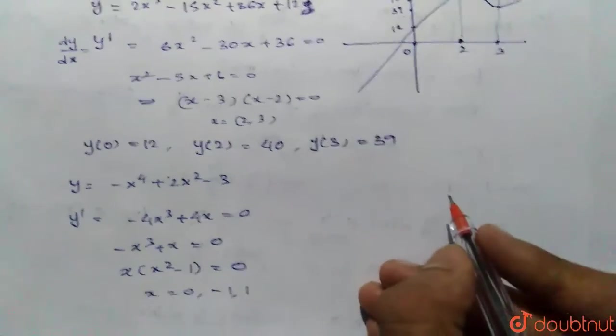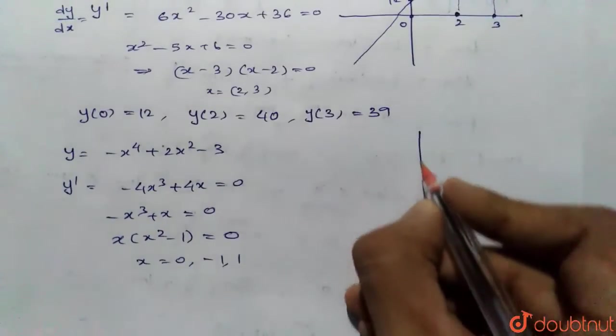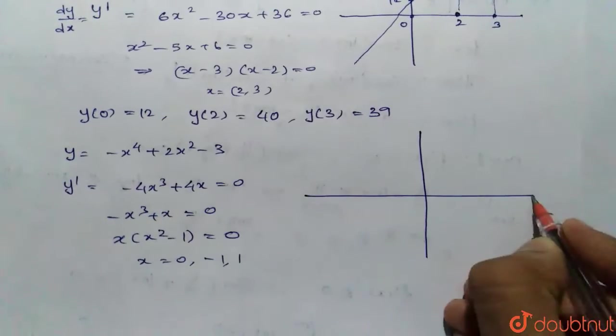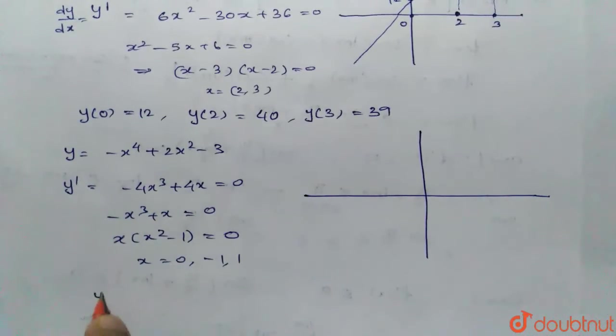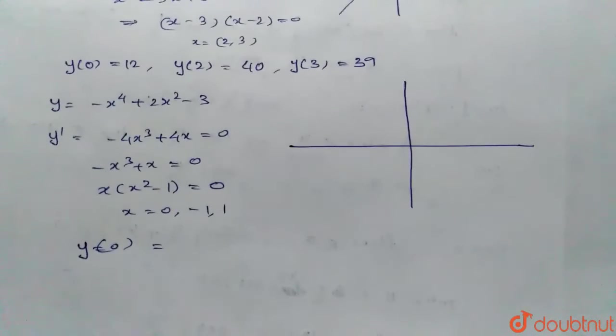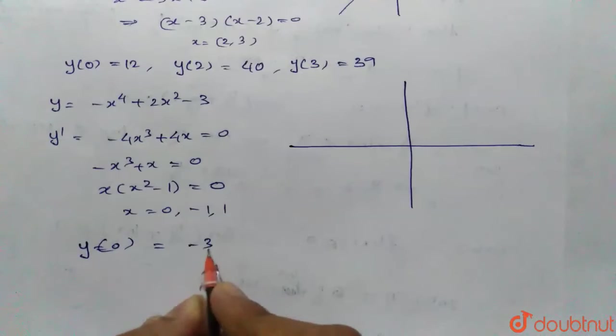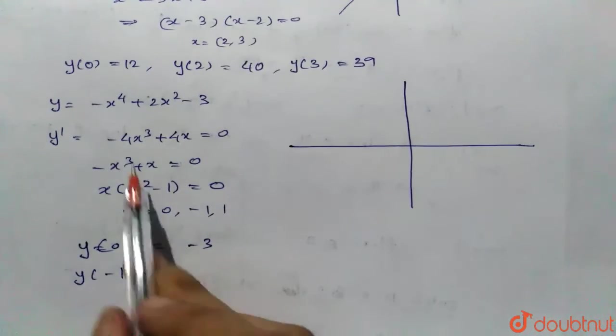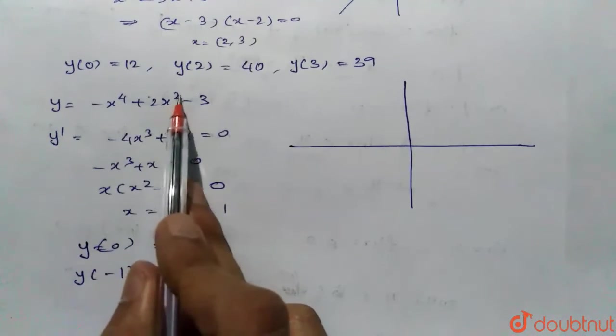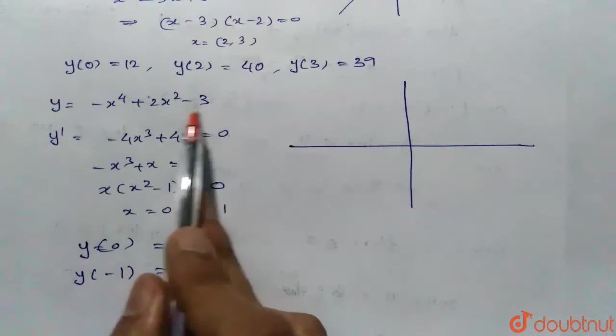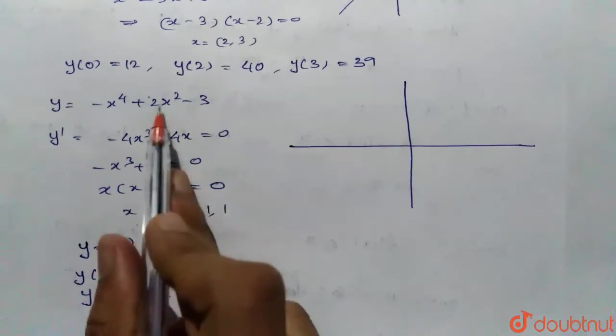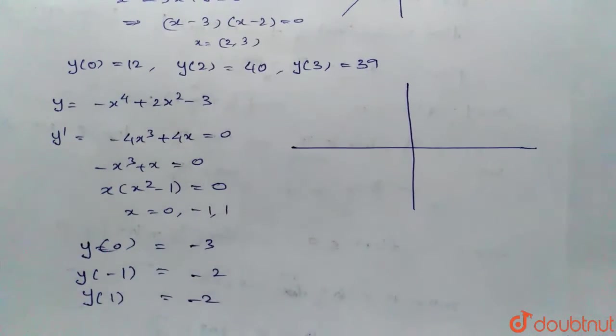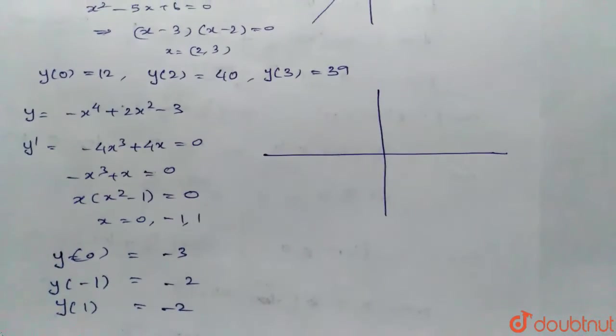We have 3 points where the curve takes a sharp turn changing its path. We would calculate the values of y at these 3 points. So, y(0) would be -3 and y(-1) would be, power 4 makes it positive and even power, -1 + 2 - 3, it would be -2 and y(1) is both are even powers, it would remain -2. So, we know the values.